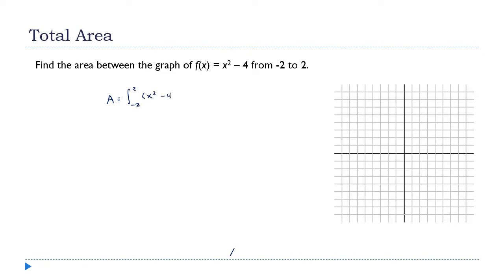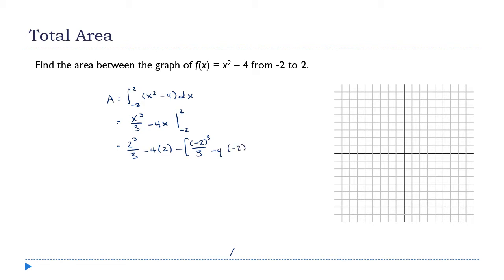Using the fundamental theorem, this is x³/3 minus 4x, evaluated from negative 2 to 2. Plugging in 2: that's 2³/3 minus 4 times 2, minus the quantity negative 2³/3 minus 4 times negative 2. This is the downside to the fundamental theorem — you get lots of fractions and it can turn into a messy arithmetic problem. This gives us 8/3 minus 8.